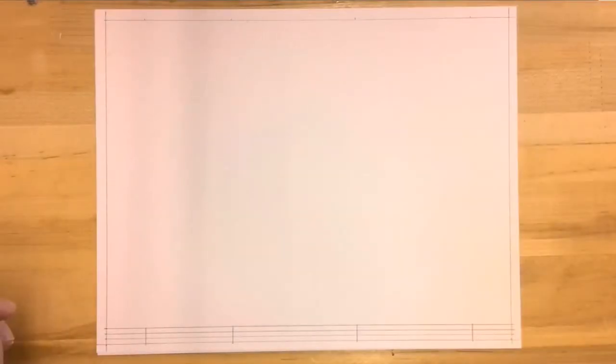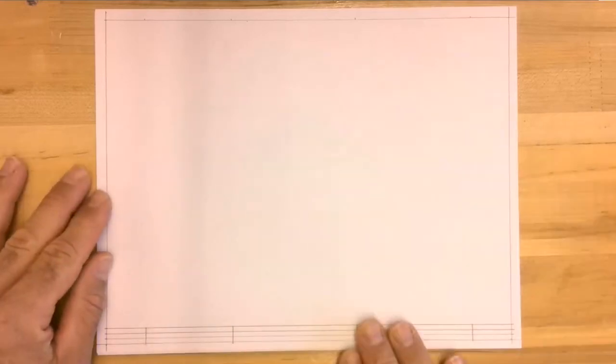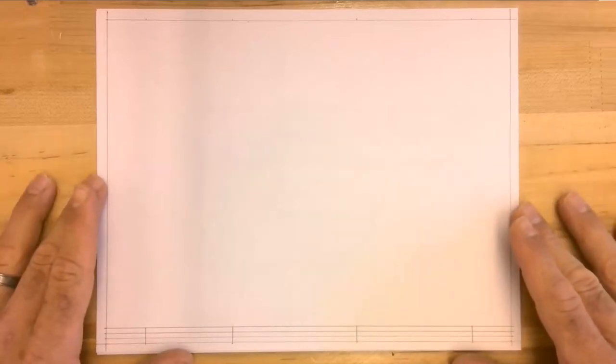To complete this drawing, first we need to have a completed border and title strip. If you don't recall how to complete that, there is a video available in our classroom explaining it. So here is my border and title strip, and I need to add an isometric cube drawing into this.